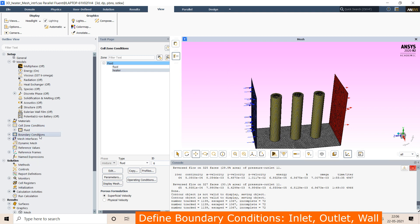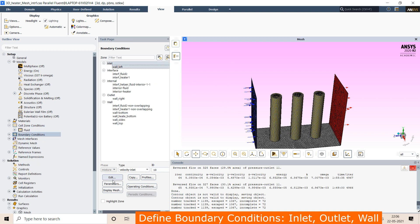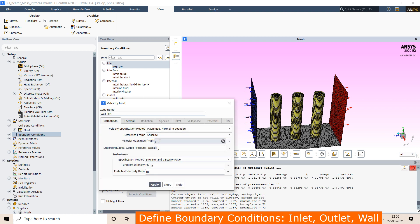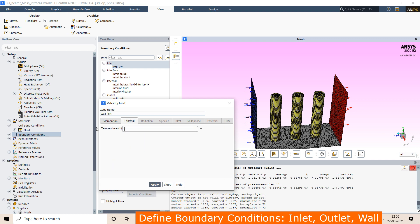Then go to boundary conditions. This left side is the inlet. I am giving velocity as 2 meters per second. Turbulence intensity and viscosity: I am giving low turbulent viscosity as 5. Temperature I am giving as 300 Kelvin.